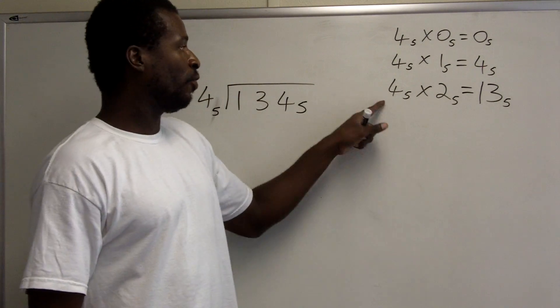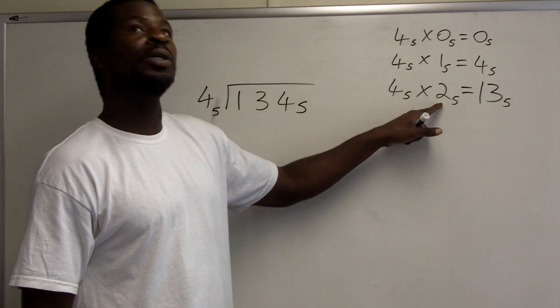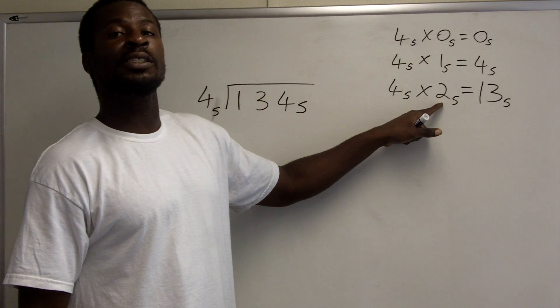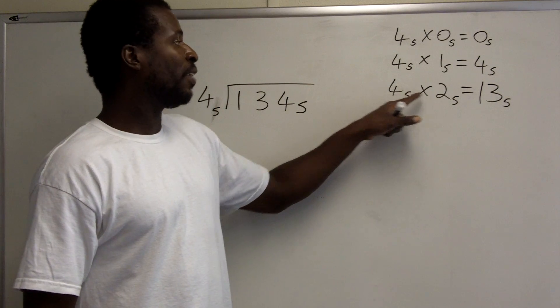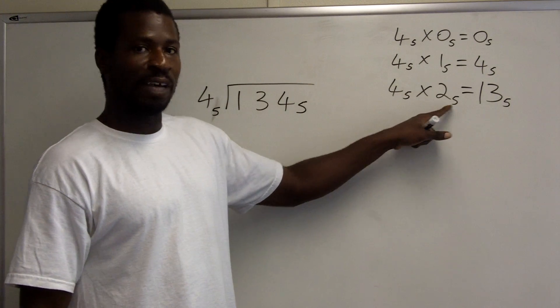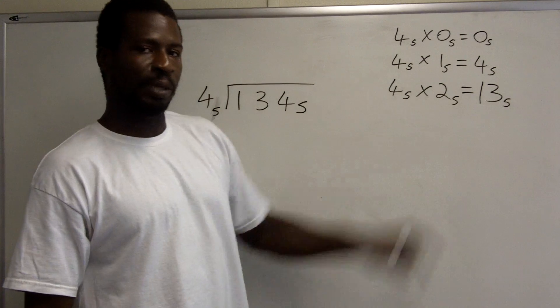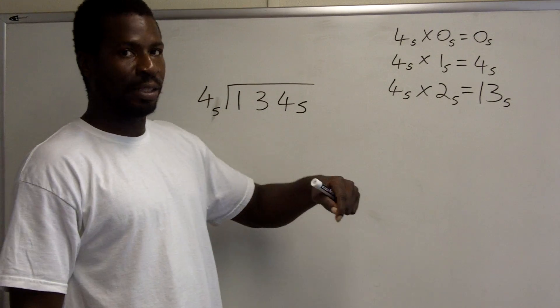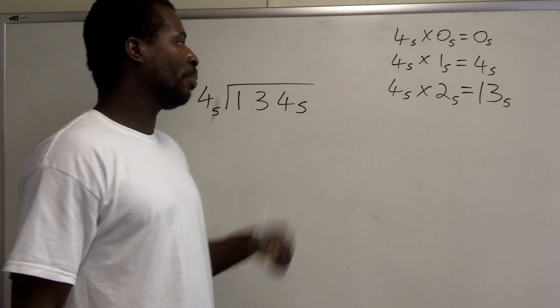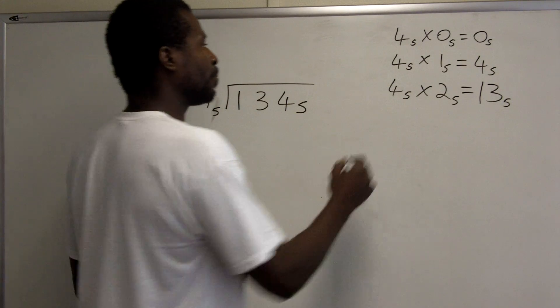So the number we think of as 8 is actually 13 base 5. So 4 times 2 is 8 base 10, but 4 base 5 times 2 base 5 is actually 13 base 5, because you have to take that 8 and convert it to a base 5 number.